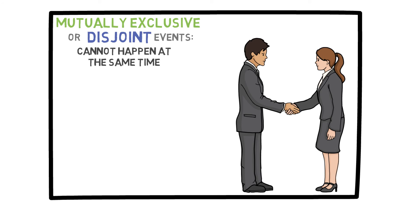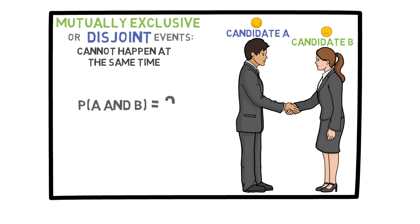Now I would like to talk about the concept of mutually exclusive or disjoint events. This means that the events cannot happen at the same time. Consider this: there is an election and there are two candidates A and B. If candidate A wins, candidate B cannot win. So we can say that these two events are mutually exclusive or disjoint. Therefore, the probability of A and B is zero because this outcome is impossible. Looking back at our formula, this means that the probability of A or B is simply the probability of A plus the probability of B.